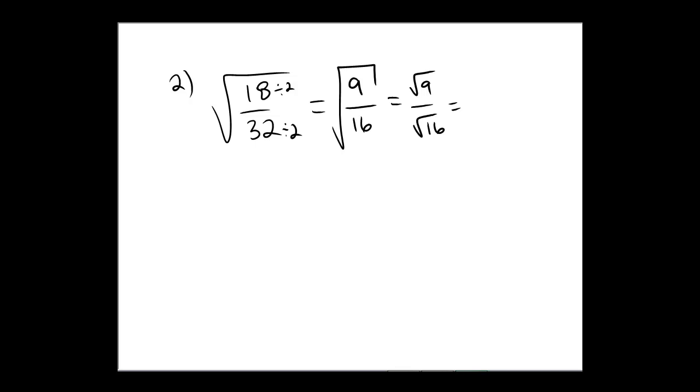And conveniently, both of these are perfect squares. Radical 9 is 3, radical 16 is 4. And thus, the answer to this one would be 3 fourths.